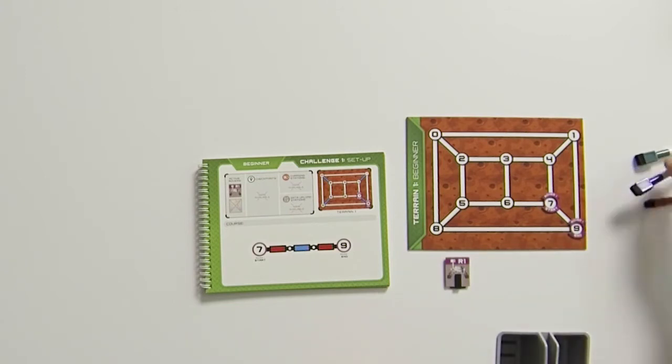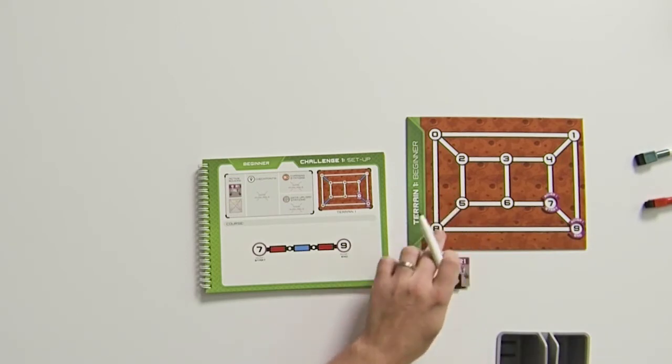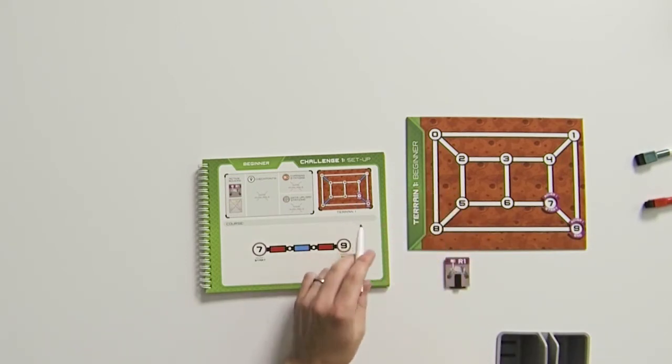And then we're going to take our colored marker and we're going to fill out the four lines on the map according to the colors shown in our setup.